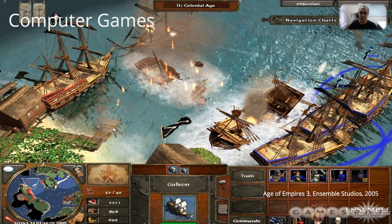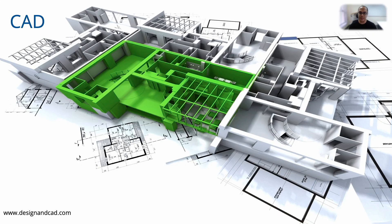A very common use of computer graphics is of course to create very nice-looking computer games. I am sure all of you have played at least some game either on your computer or on a smartphone. Graphics is also used extensively for computer aided design. Here is an example from computer aided architectural design, but there are also applications to mechanical design, structural design, electronic design and so on.